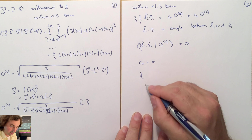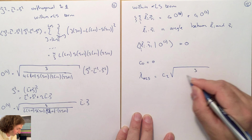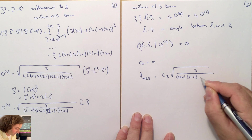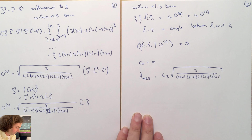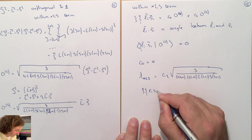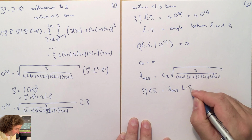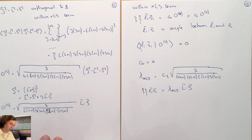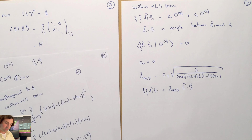We now define lambda_{α,L,S} as c_2 times the square root of 3 / [(2S+1)(2L+1)·L(L+1)·S(S+1)], such that we are left with the equation that our spin-orbit operator within an LS term is given by lambda_{α,L,S} · L·S.